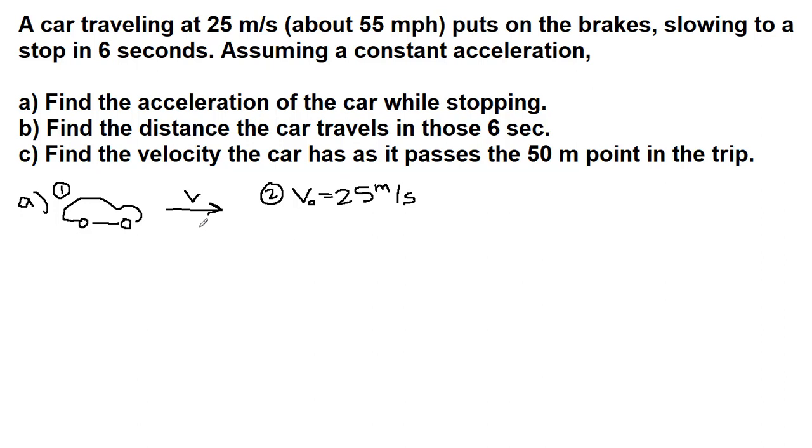Because the car puts on the brakes, that means that it is going to be slowing down. Our acceleration points in the opposite direction, and it is extremely useful to draw that into our picture. And we're told that it slows to a stop, which means that the final velocity is 0 meters per second, because that's what the word stop is trying to tell us. And it takes 6 seconds to do so.